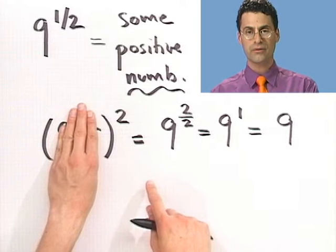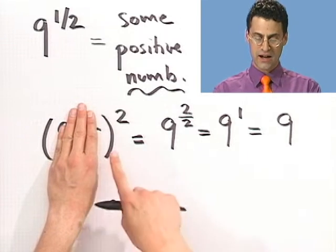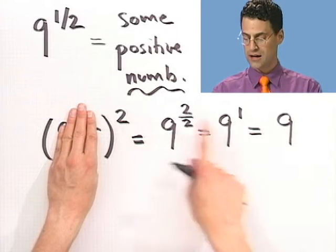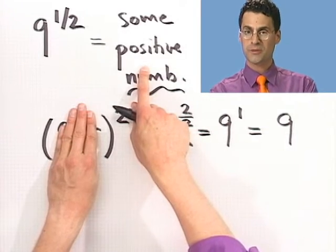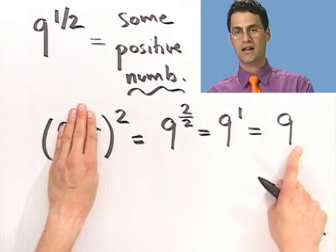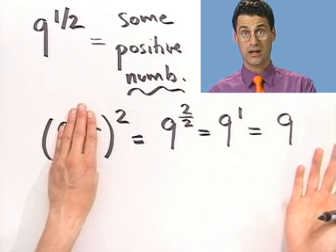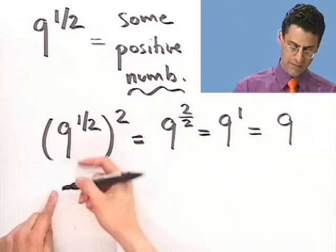So what do I see? I see that this mystery number, the thing I don't know, has the property that when I square it, I get 9. Now can you think of a positive number that has the property that when I square it, I get 9? Well, I can: 3. So in fact, this number must be 3.